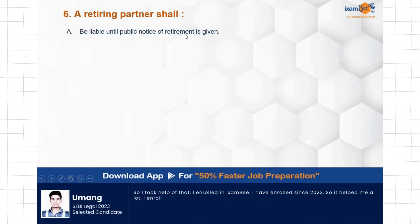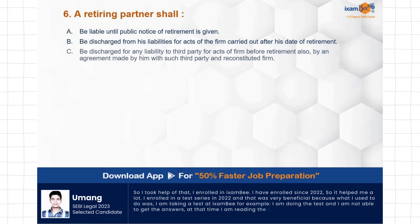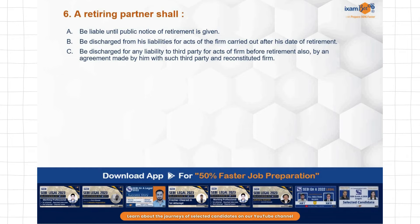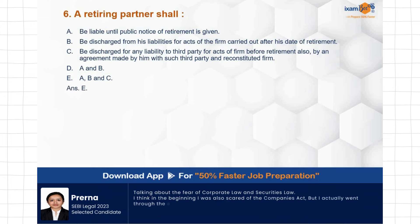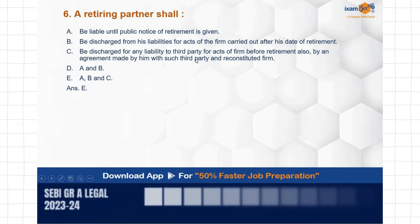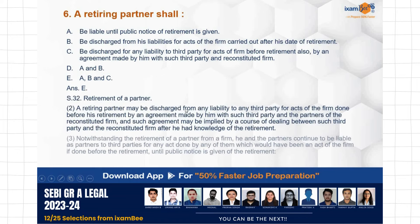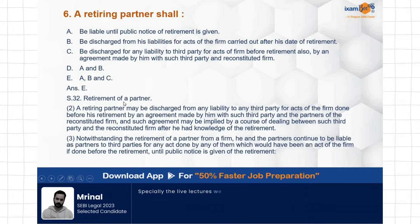Question: A retiring partner shall — be liable until public notice of retirement is given, be discharged from liabilities for acts of the firm carried out after his date of retirement, be discharged from liability to third parties for acts before retirement by an agreement with such third party and the reconstituted firm. Options: A and B are correct, or A, B and C all correct. The correct answer is that all of these are correct — A, B and C. This is covered under Section 32, Clauses 2 and 3.